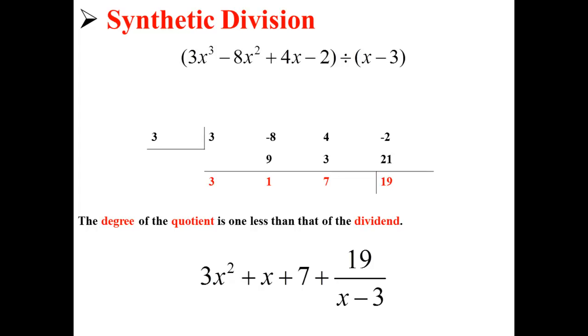Here, the degree of the quotient is 1 less than that of the dividend. So our final answer is 3x² + x + 7 + 19/(x - 3). And now, we've performed synthetic division.